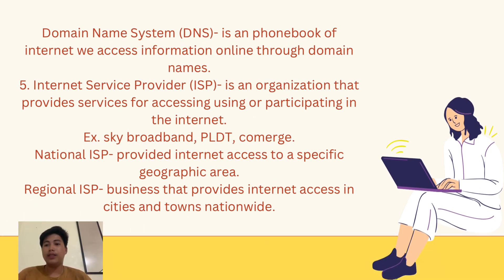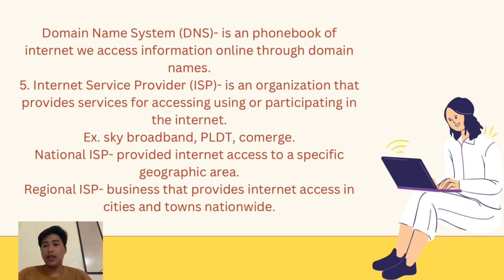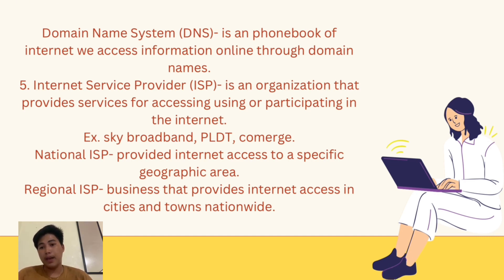Number four: Domain Name System, or DNS. It is the phone book of the internet — we can access information online through domain names. Number five: Internet Service Provider, or ISP, is an organization that provides services for accessing and using the internet. Examples include Sky Broadband, PLDT, and Converge. A National ISP provides internet access to a specific geographic area. A Regional ISP is a business that provides internet access in cities and towns nationwide.